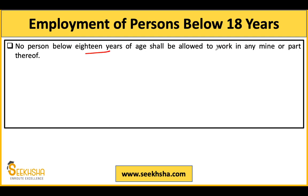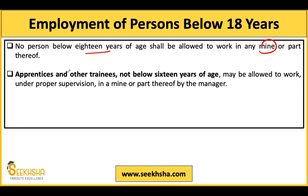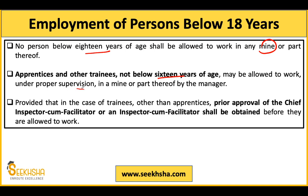Regarding employment of persons below 18 years: no person below 18 years of age can be appointed in any work in a mine. For apprenticeship or trainees, the minimum age is 16 years; for permanent employment or regular work in a mine, it is 18 years. Workers aged 16 can work only under proper supervision — you cannot send them into a mine alone.